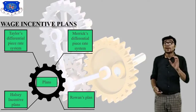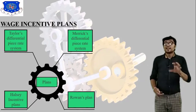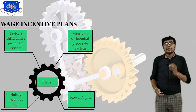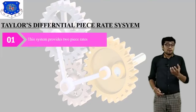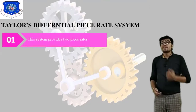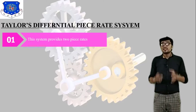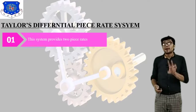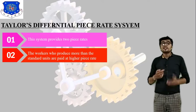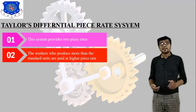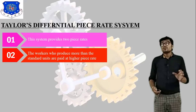The third important wage incentive plan relates to extra bonus given to the worker based on worker efficiency. Now let's start Taylor's Differential Piece Rate System. This system provides two different piece rates. The first part is that workers who produce more than the standard unit are paid at a higher piece rate.